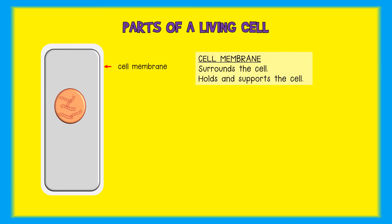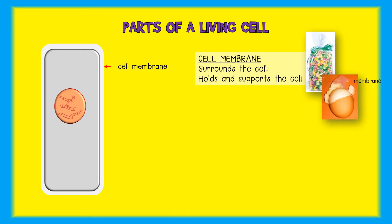Living cells are surrounded by a membrane. The membrane holds the parts of the cell together in a similar way that a plastic bag keeps things together. If you have ever shelled a hard-boiled egg, you have seen the membrane that surrounds the egg. The membrane allows chemicals like water and gases to move in and out of the cell.